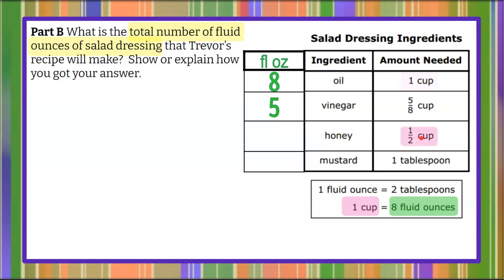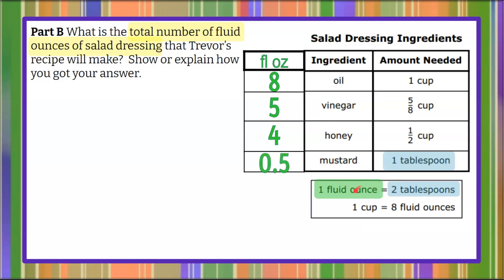Let's look at honey — honey is a half a cup. If one cup is eight fluid ounces, a half a cup would be half of that, so four. Half of eight is four. Now let's look at mustard — mustard is in tablespoons, so we go to the conversion ratio: two tablespoons is equivalent to one fluid ounce. We have one tablespoon, which is half of this conversion, so that's half a fluid ounce. Now we need to total everything up for the complete recipe.